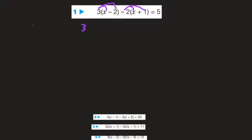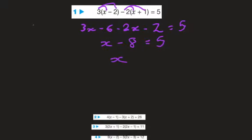So 3 times x is 3x, 3 times minus 2 is minus 6, minus 2 times x is minus 2x, and minus 2 times positive 1 is minus 2, and that equals 5. Now we gather like terms: 3x minus 2x is x, minus 6 minus 2 is minus 8, and that equals 5. Adding 8 to both sides, x is equal to 13.